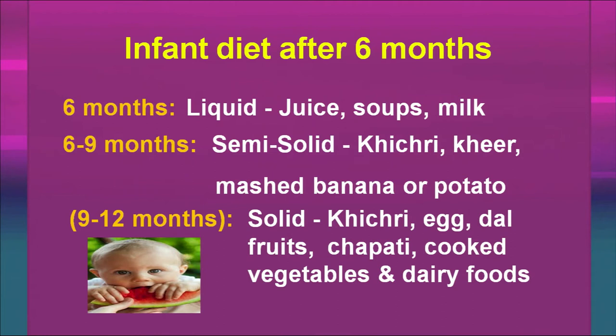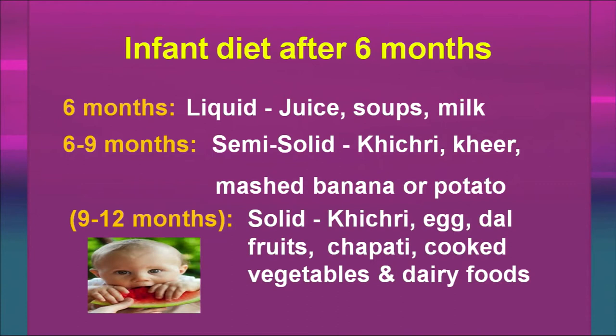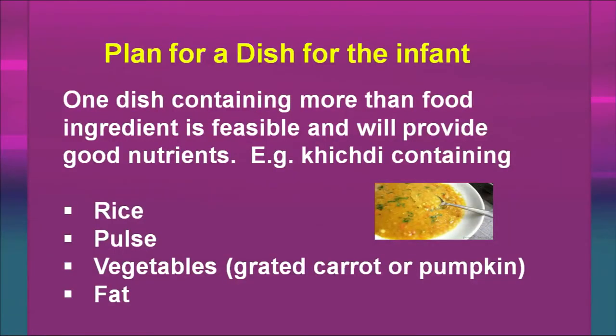At the age of 9 to 12 months, solid foods can also be introduced in the infant's diet, like khichdi, egg, dal, fruits, and chapati. In later months, cooked vegetables and dairy foods can be added. One dish can be prepared for the infant since a variety of foods cannot easily be eaten. The food must also be nutrient-dense — for example, khichdi containing rice, pulse, grated vegetables, and some fat can be prepared.